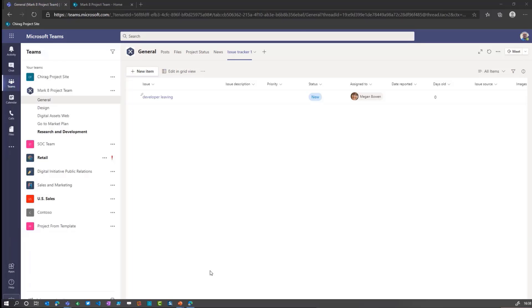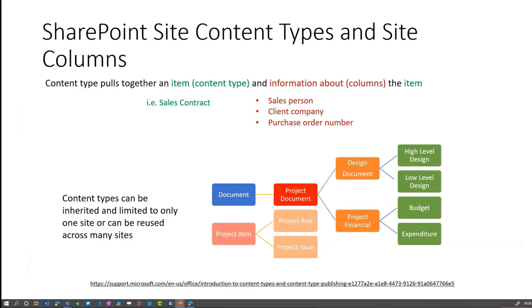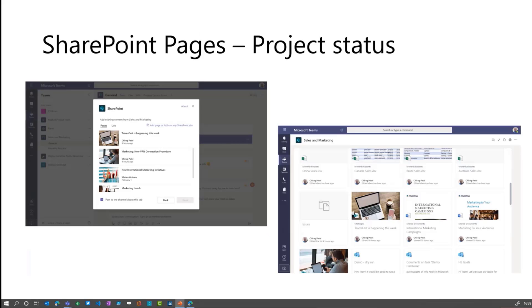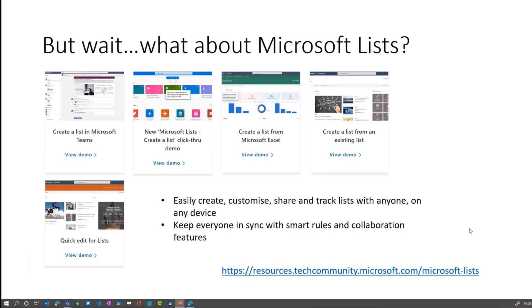Just going back to the slides — I'm conscious of time. The key takeaways are: take advantage of content types, they are here to stay, and there's a lot of modernization going on. We looked at project status pages as well. When you think about where to store your list, your issues and everything else, Microsoft Lists is the way forward. Hopefully this session has given you a starter to lighten your project management using Microsoft Teams with the out-of-box experiences available. There's obviously a lot more to cover — you could even use Power BI for reporting. But many organizations use projects in different ways, and this gives you that starting point.